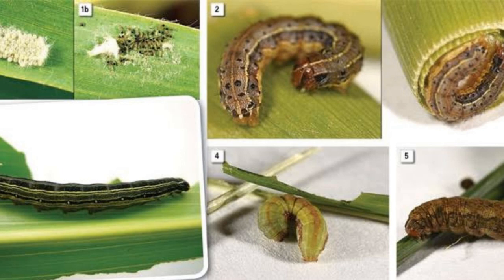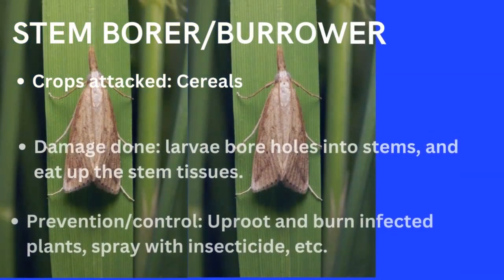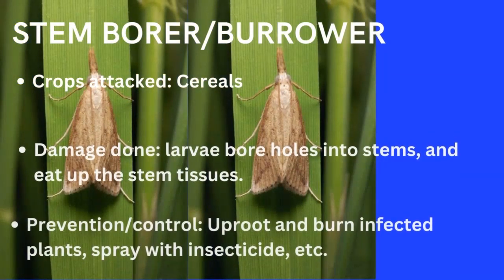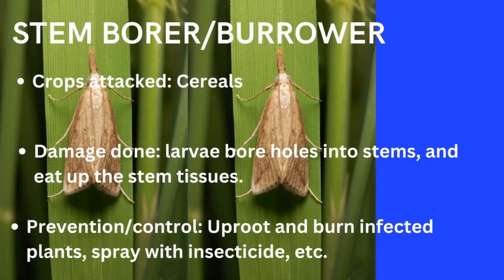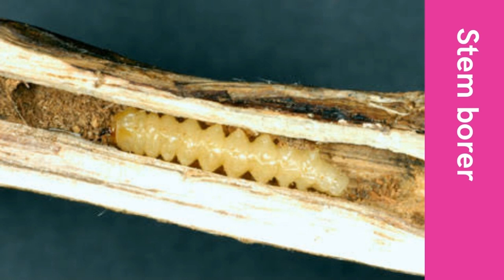The control method for armyworms is by hand picking and spraying of the maize plant with insecticide. Hand picking is a mechanical method of pest control, while spraying with insecticide — for example, DDT — is an example of a chemical method of crop pest control.